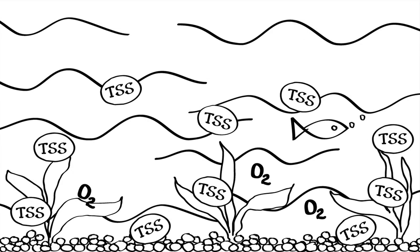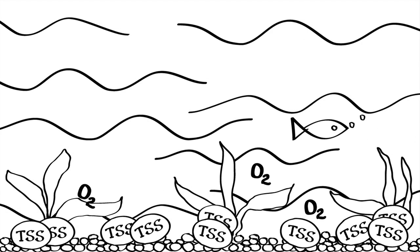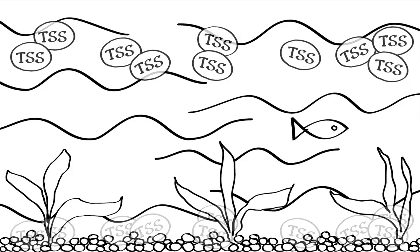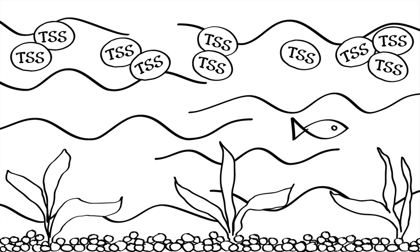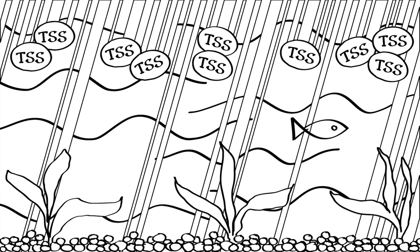If settleable, suspended matter can blanket the stream bed, damage invertebrate populations, block gravel spawning beds, and, if organic, remove dissolved oxygen from the overlying water column.